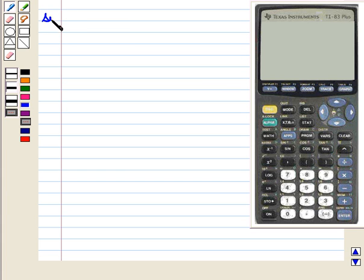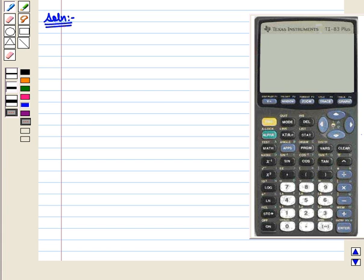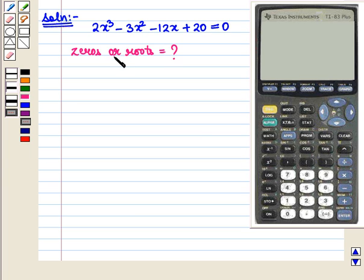Let us start with the solution of the given question. Here we have to find the zeros or roots of the polynomial equation 2x³ - 3x² - 12x + 20 = 0 graphically using a graphing calculator. First we shall graph this on the calculator.